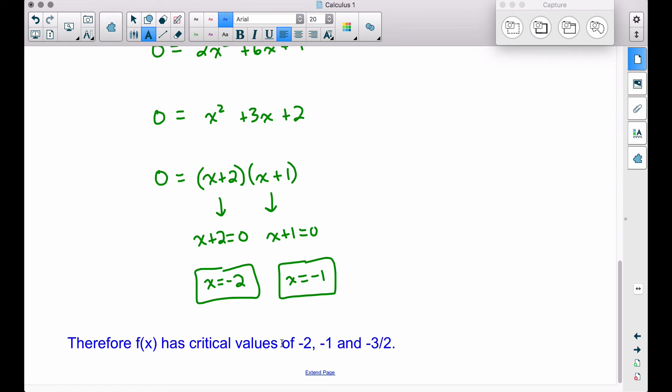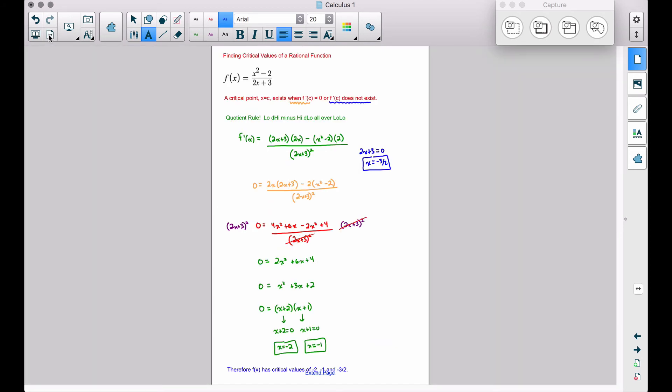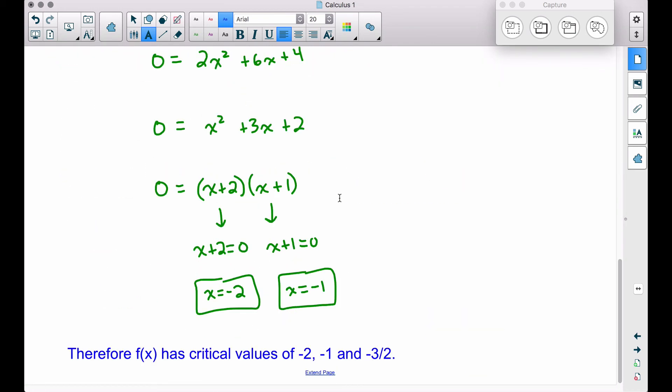Therefore, combining all of this stuff together, f of x has critical values of negative two, negative one, and negative three halves. The negative three halves came from this piece right here. I know that's kind of small, but that's what we are addressing here. There are three critical values here.